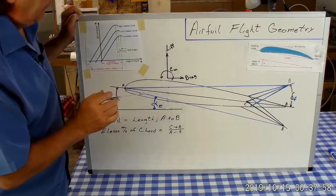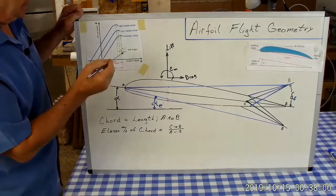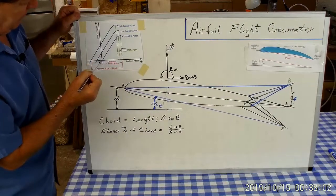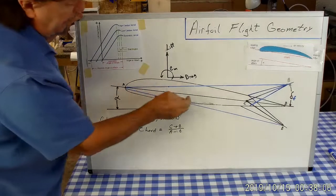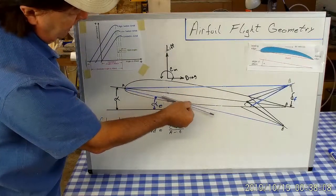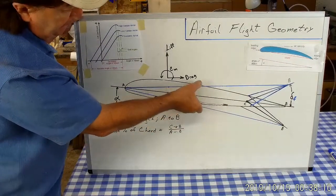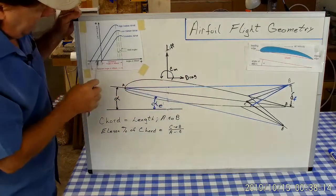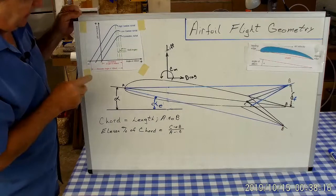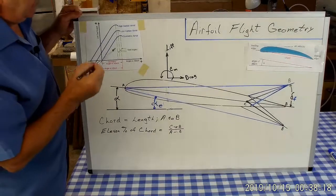As we go to a very high cambered airfoil, it pushes this curve even further back this way. So as this effective cord line moves down, you have to tilt this airfoil down, down, down, down more—more negative angle of attack—in order to get the zero lift.